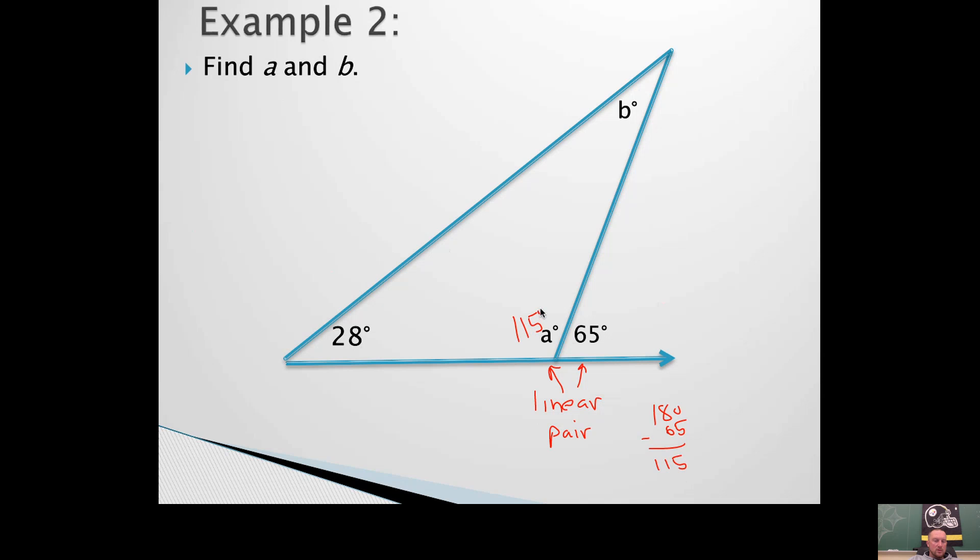So your obtuse angle is 115 degrees. Now you know two of the angles in the triangle, so you can find the third one. So 115 to 28. That adds up to 143.